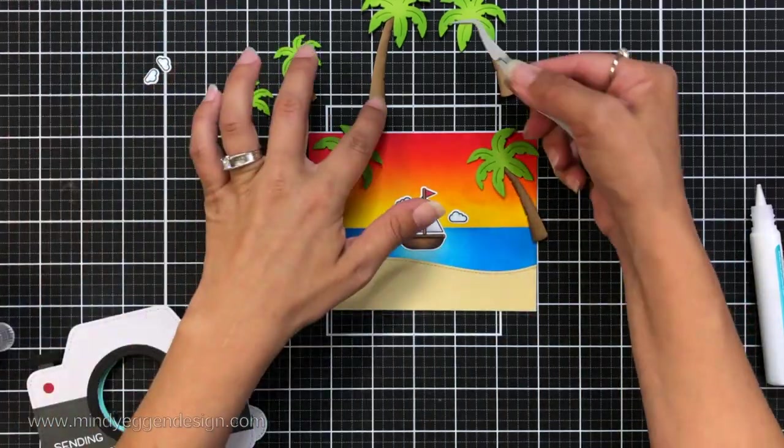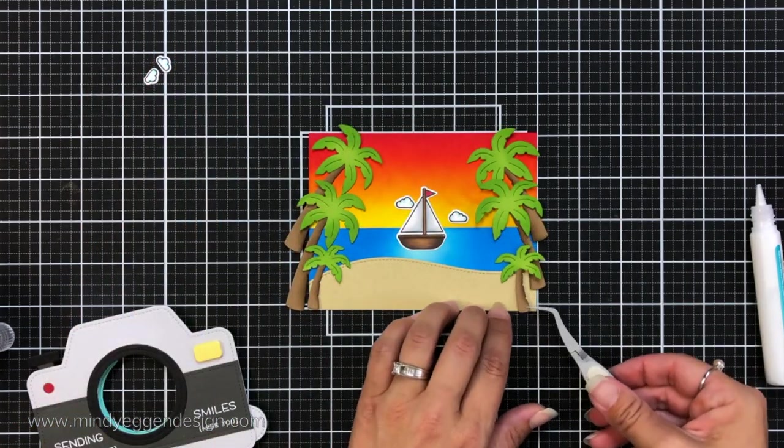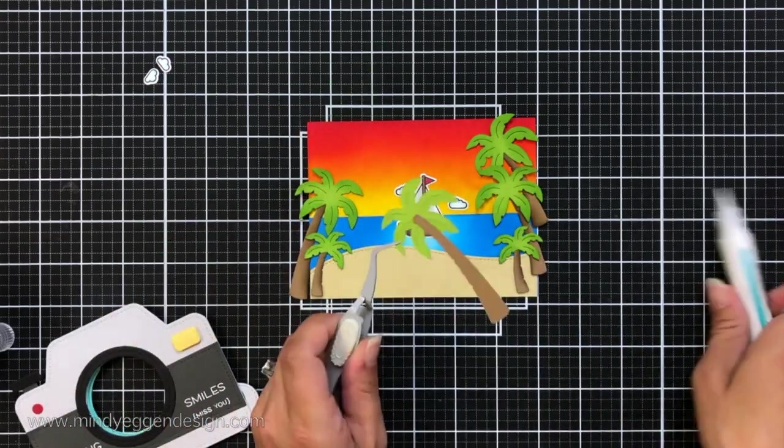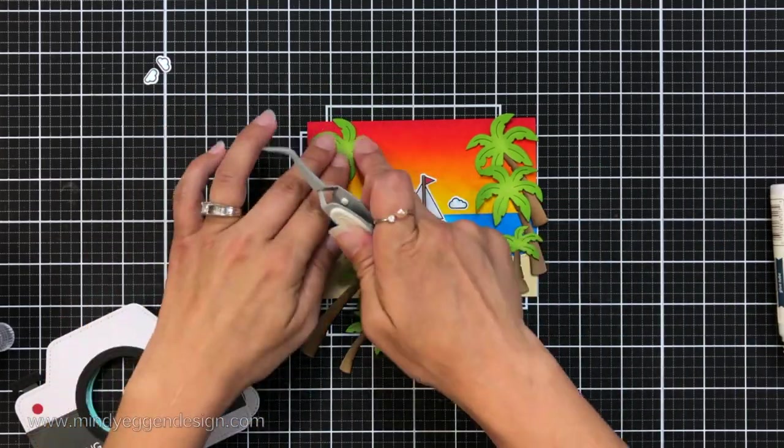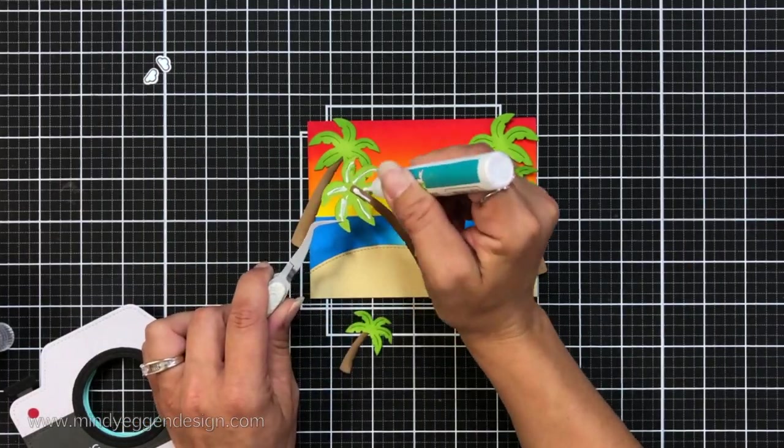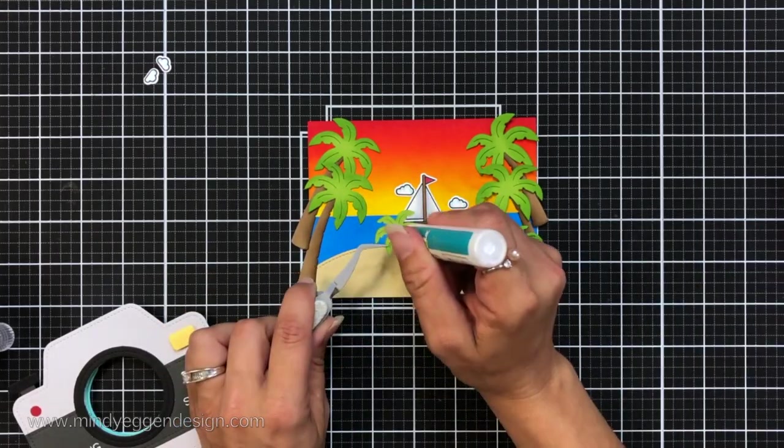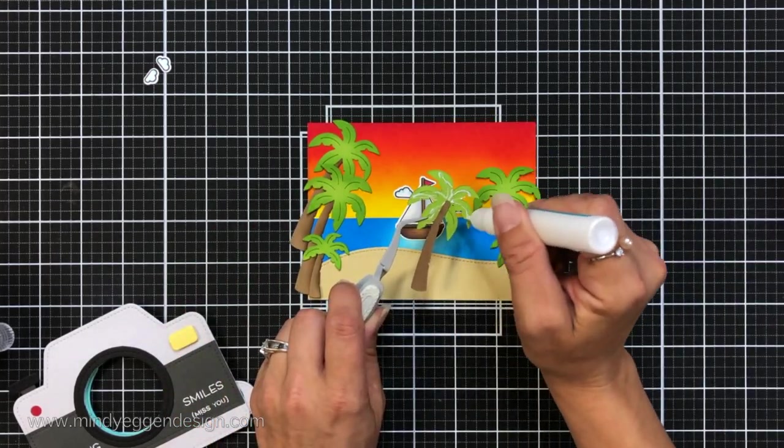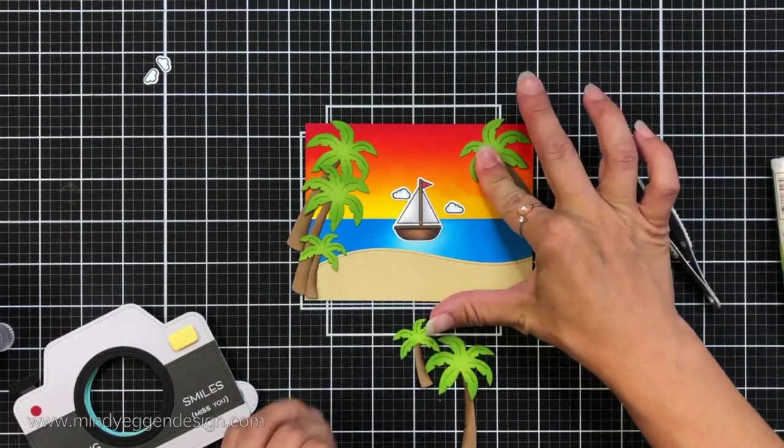And then I'm just adding the tops of the palm trees to the trunks with some liquid glue and once that's dried I'm lining up about where they're going to go on the side of the card. Now you could definitely add these to the front and kind of overhang on the camera but I really wanted to showcase the camera and I'm keeping it symmetrical so it's the same on both sides. I have two big ones on each side and then a small one on each side so it's the same and kind of balances the card out a little bit.